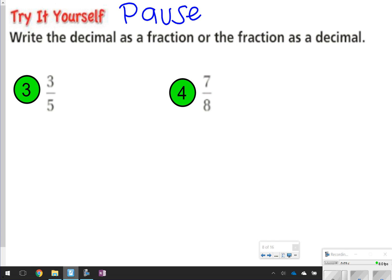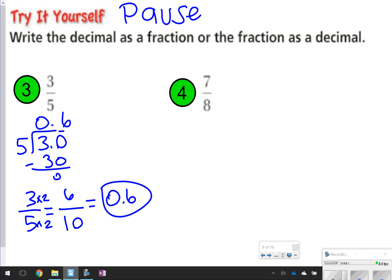Alright, let's go ahead and look at number 3. For number 3, you could have done both ways. If you divided 3 by 5, add a 0, that's going to give you 0.6. Or you could do 3 over 5 is equal to something over 10. 5 times 2 is 10, so 3 times 2 is 6, and that'll be 6 tenths or 0.6. So either one will work there.